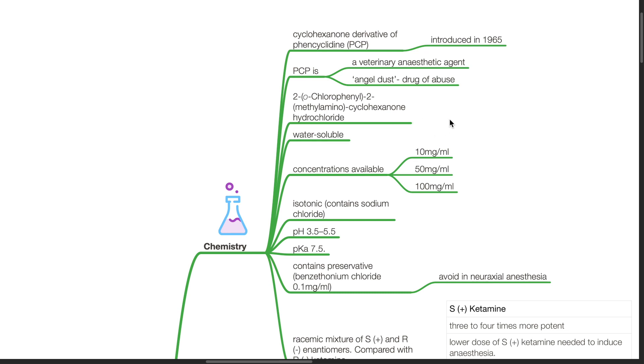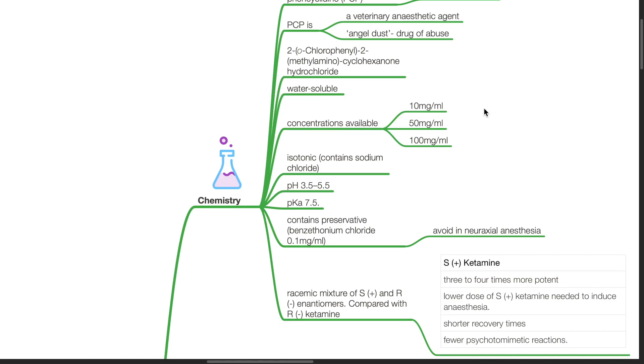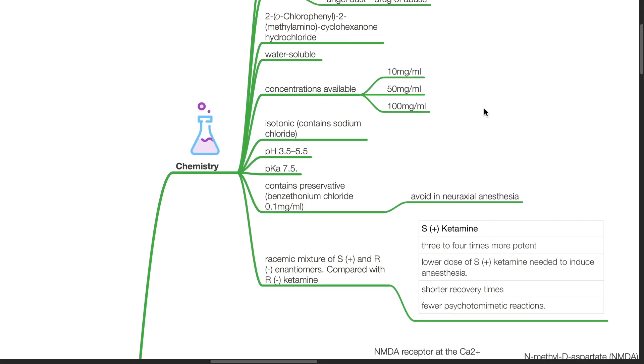The chemical name for ketamine is 2-O-chlorophenyl-2-methylamino-cyclohexanone hydrochloride. Ketamine is water-soluble. Concentrations available include 10 mg per ml, 50 mg per ml, and 100 mg per ml. Ketamine is isotonic and contains sodium chloride. The pH is 3.5 to 5.5. pKa is 7.5. Ketamine contains preservative benzethonium chloride at 0.1 mg per ml.